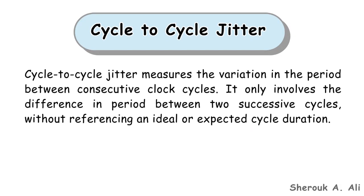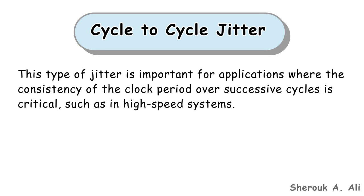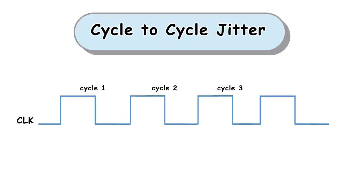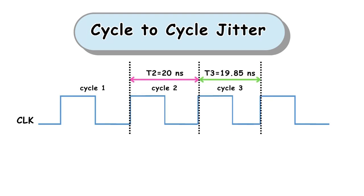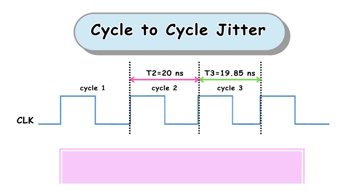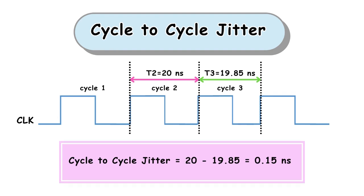The second type is cycle-to-cycle jitter, which measures the variation in period between consecutive clock cycles. It only involves the difference in period between two successive cycles, without referencing an ideal or expected cycle duration. This type of jitter is important for applications where consistency of the clock period over successive cycles is critical, such as in high-speed systems. As shown in the example, the clock period at cycle 2 equals 20 nanoseconds, while the clock period at cycle 3 equals 19.85 nanoseconds. Therefore, the cycle-to-cycle jitter equals 20 minus 19.85 equals 0.15 nanoseconds.